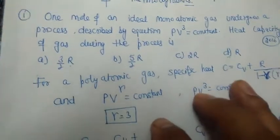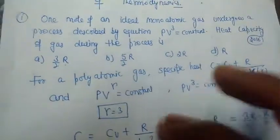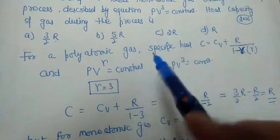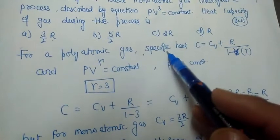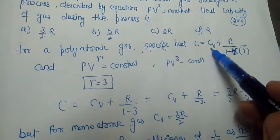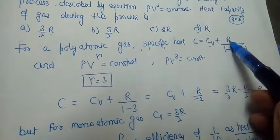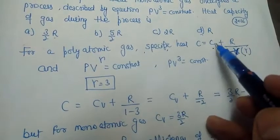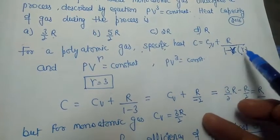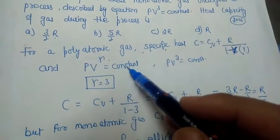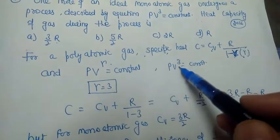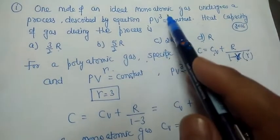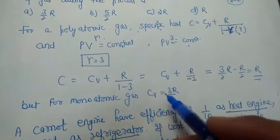This question was in the NEET 2016 exam. The options are 3/2 R, 5/2 R, 2R, or R. For a polytropic gas, the specific heat is C = Cv + R/(1 - n), where n is the polytropic index. Here, PV^γ = constant, and we are given PV³ = constant, so comparing gives γ (n) = 3.